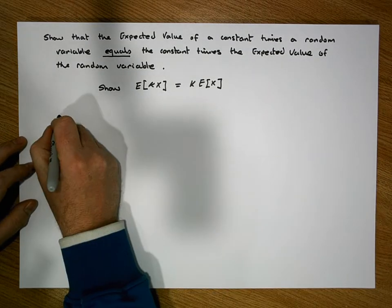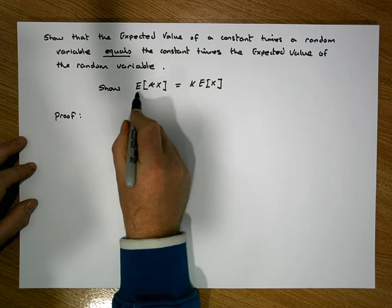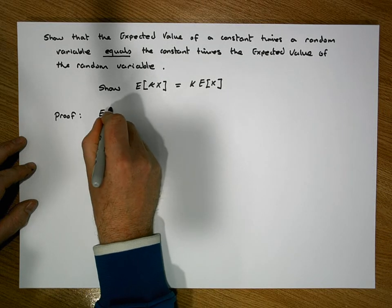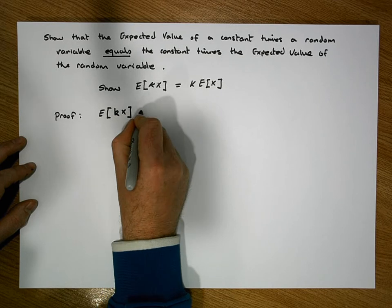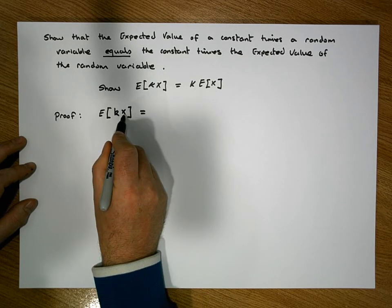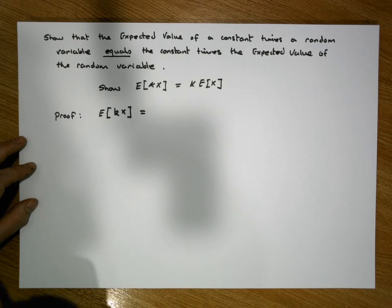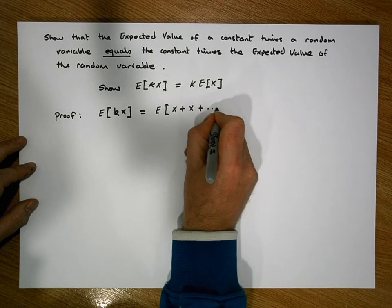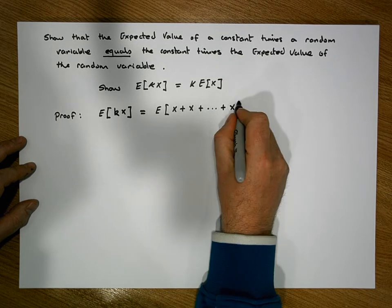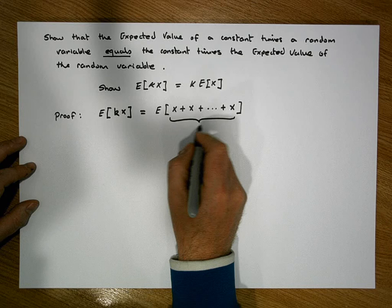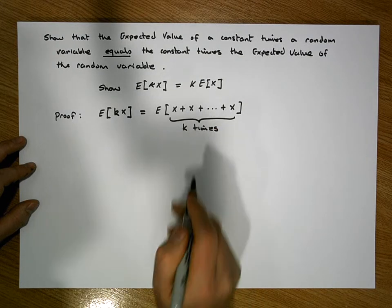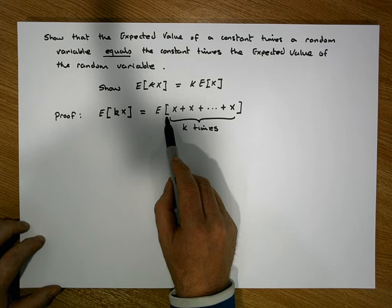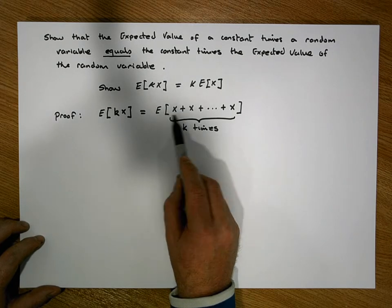So let's try to prove this. Looking at the expected value of a constant k times a random variable — k times the random variable means it's the summation of k of these random variables. So this is the same as the expected value of the random variable plus the random variable, all the way through to the random variable, where we have k of these particular random variables. Now what we know is that when observations are independent, the expected value of a summation of independent observations is the same as the sum of the expected values.